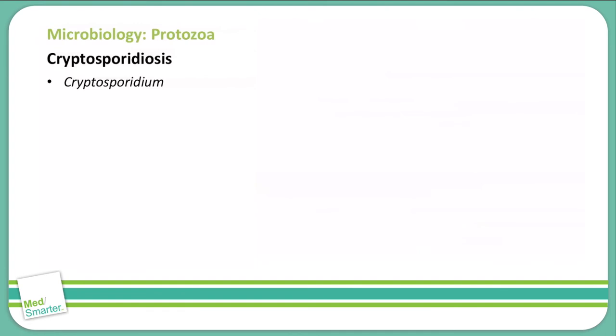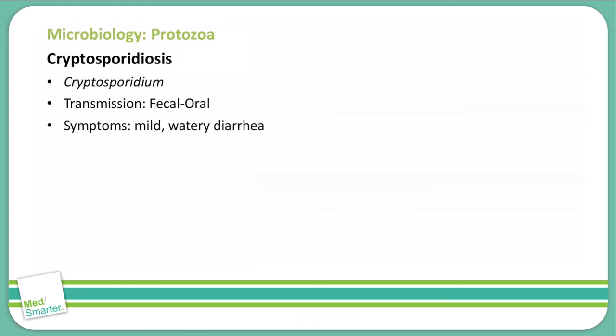Next we will talk about cryptosporidiosis. Cryptosporidiosis is caused by multiple Cryptosporidium species and is transmitted once again through the fecal-oral route. Our symptoms include a mild watery diarrhea. To distinguish between the GI protozoa: giardiasis produces fatty foul-smelling diarrhea, amebiasis produces bloody diarrhea, and cryptosporidiosis produces a mild watery diarrhea.